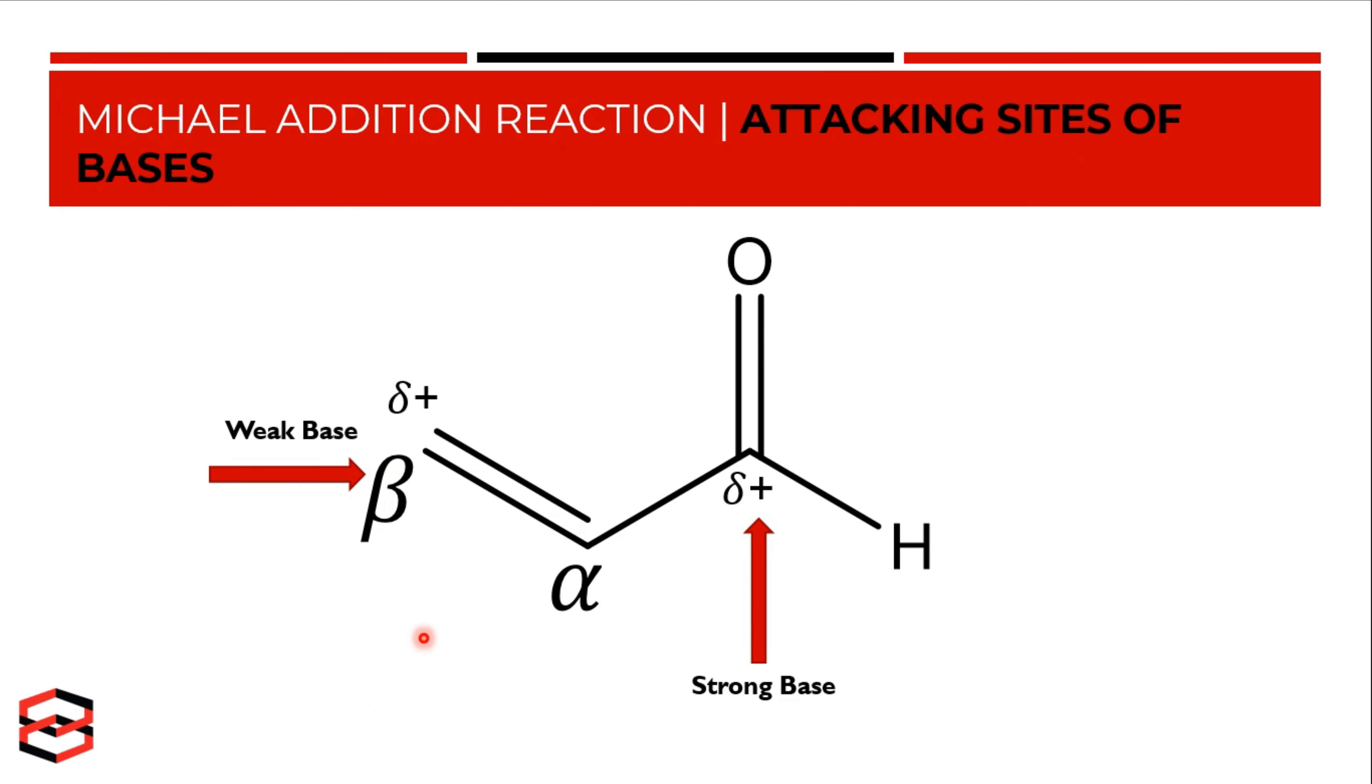In order to get the Michael addition reaction, we want a stabilized enolate or weak base to attack at the beta carbon. And so that's why it's good that the enolate is between two carbonyl groups, because weak bases prefer to attack the beta carbon.